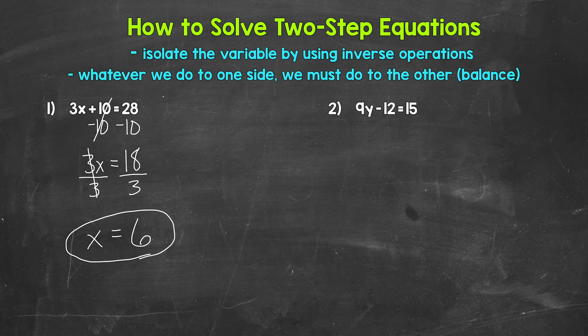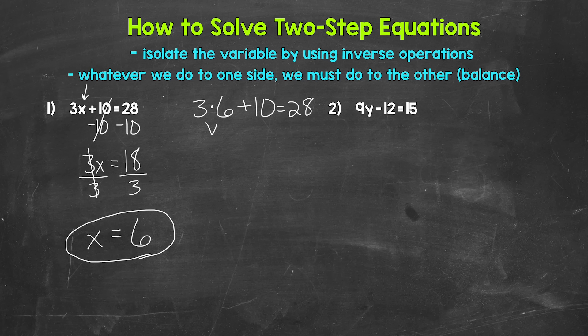Now we can always check to see if we are correct by plugging in what we got and seeing if it works. Let's plug in 6 for x: 3 times 6 plus 10 equals 28. We multiply first — 3 times 6 is 18 — so we have 18 plus 10. 18 plus 10 is 28, so we are correct. x equals 6.